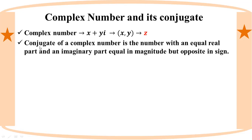That is a conjugation of a complex number. A complex number is a number with an equal real part. The imaginary part is equal, and the magnitude of the two prerequisites are in the same area. That is why this complex number is conjugated — the real part has the same magnitude.